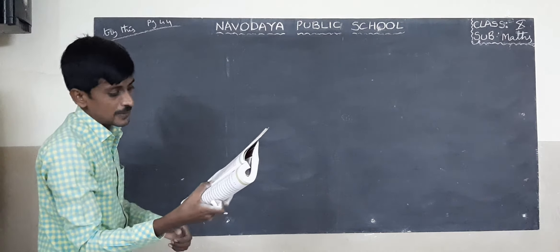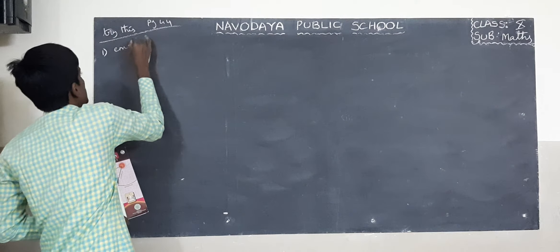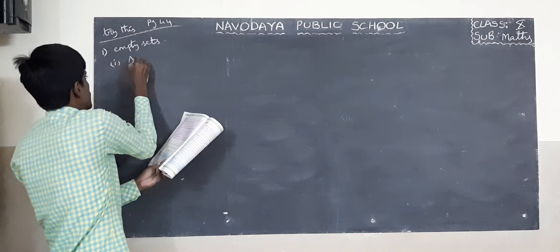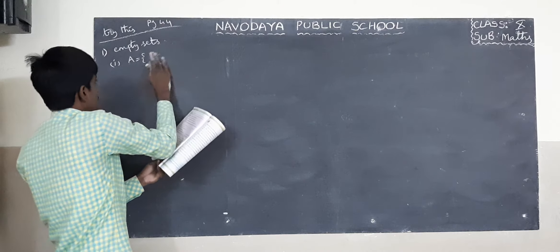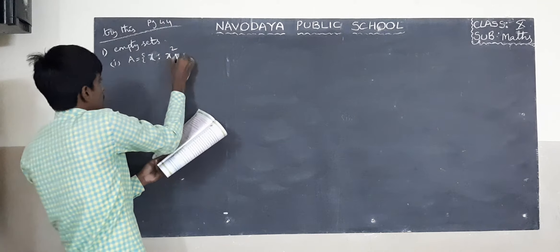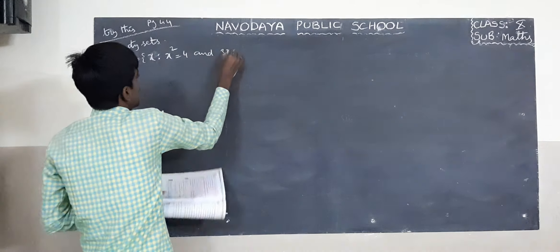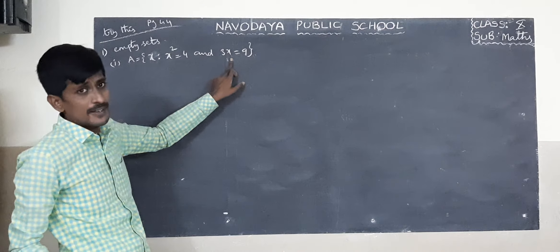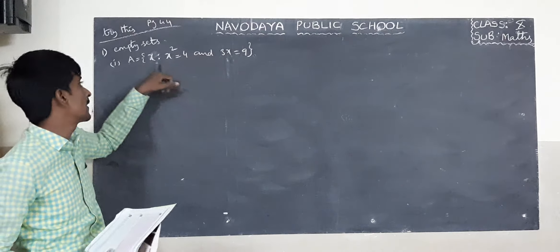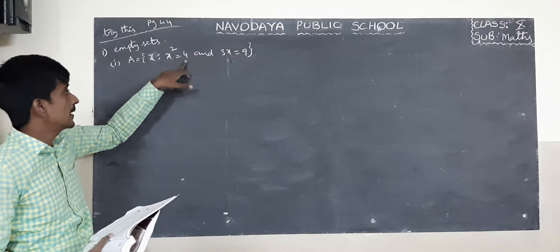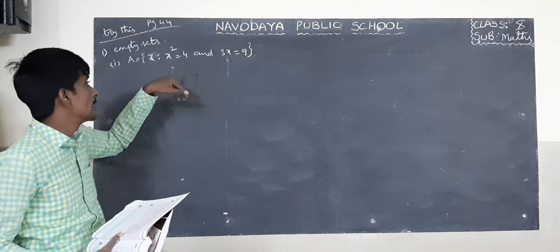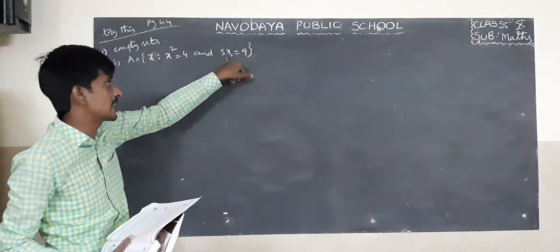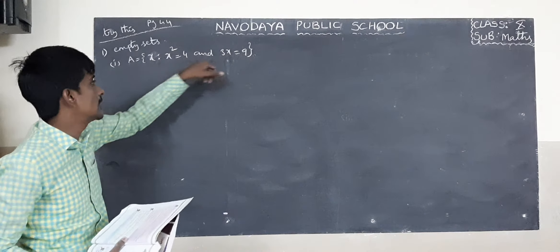Which of the following sets are empty sets? First one: A equals the set of x such that x squared equals 4 and 3x equals 9. There are two conditions to be satisfied. You will substitute any value in the place of x and check if both conditions are satisfied.